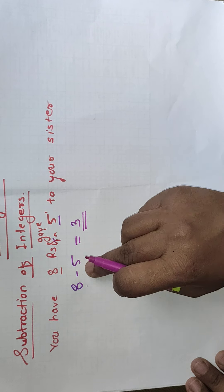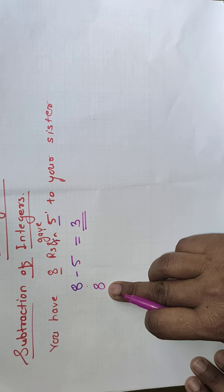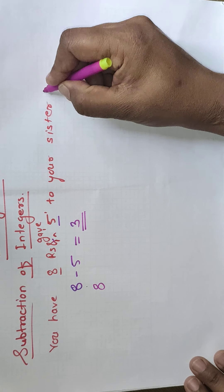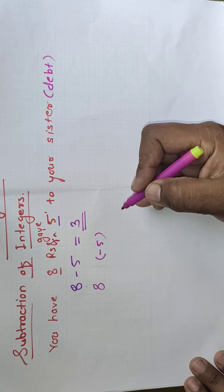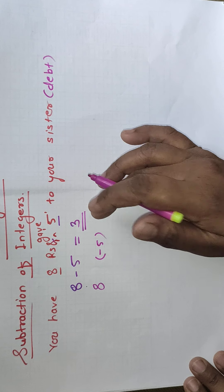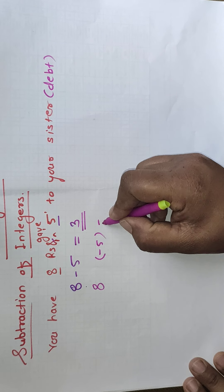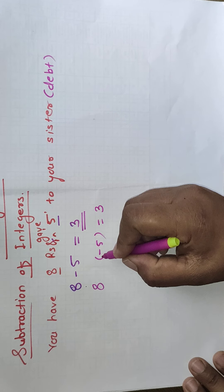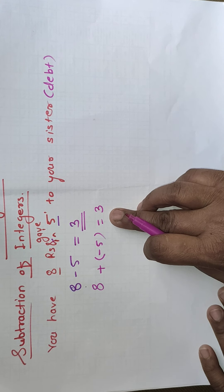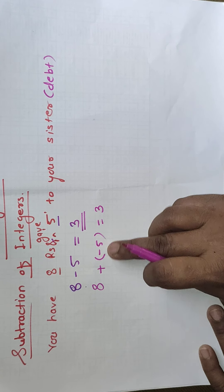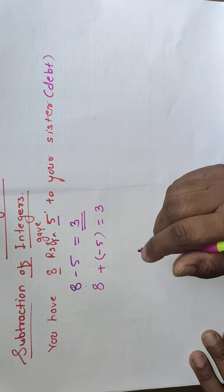We can write this one more way. You already have 8 rupees, and the debit we are writing as minus 5. So 8 minus 5 equals 3. Now when we are doing the addition: 8 plus (minus 5) is also equal to 3, because different signs are there, we do the subtraction. Take one more example: you have 5 rupees and you buy a pen of 5 rupees, so 5 minus 5 equals 0.